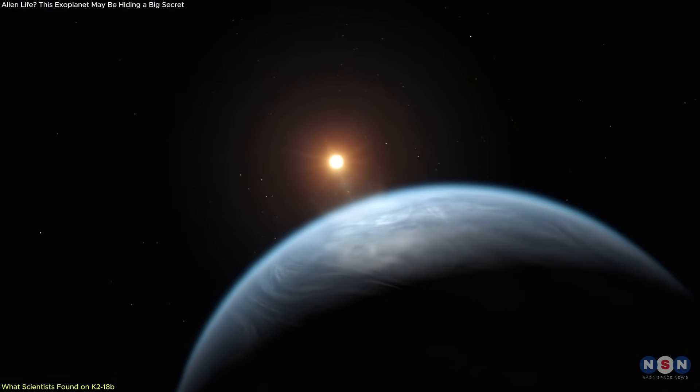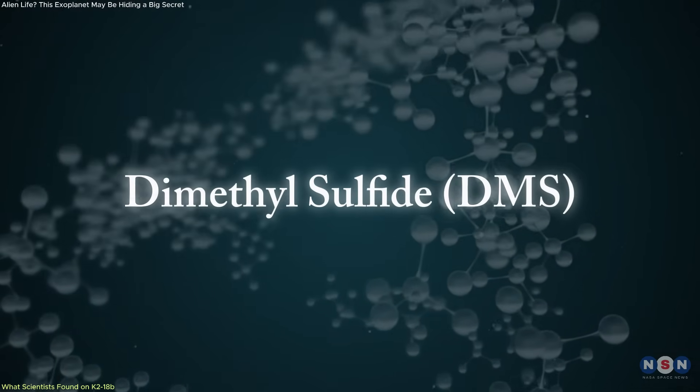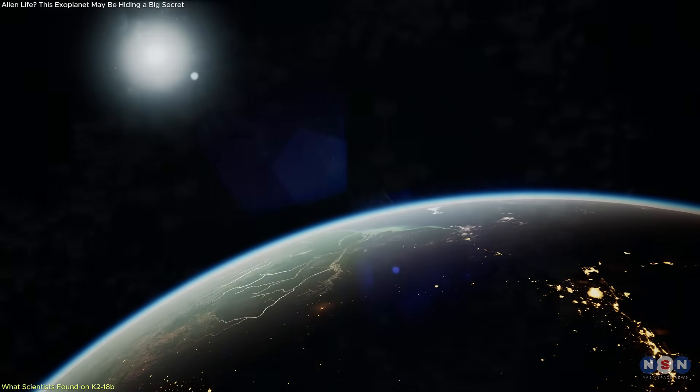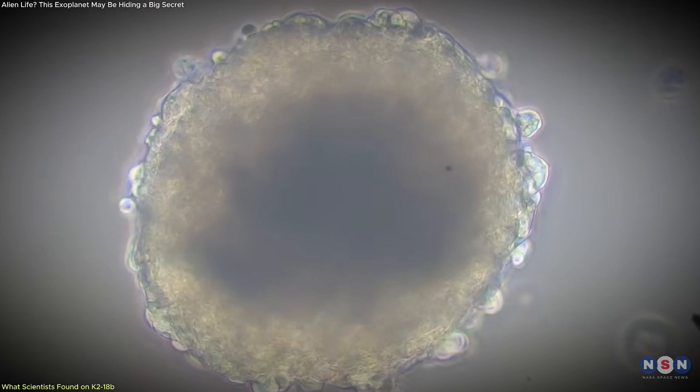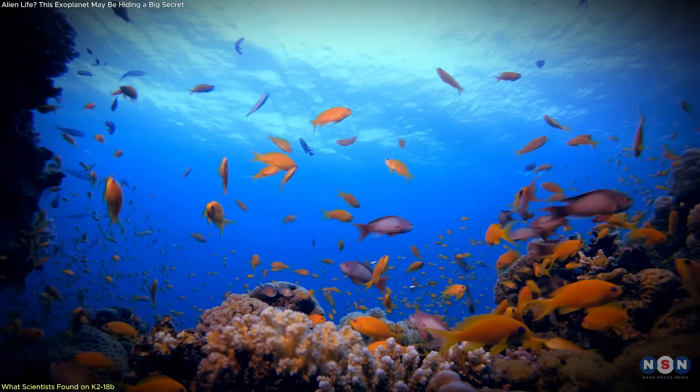What caught global attention was the tentative detection of dimethyl sulfide, DMS, and dimethyl disulfide, DMDS, two molecules that on Earth are primarily produced by marine microorganisms. If real, their presence could hint at biological activity.